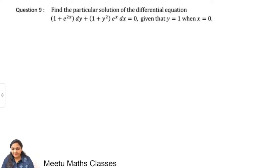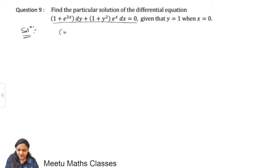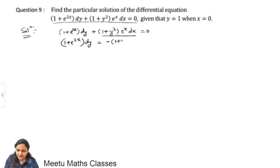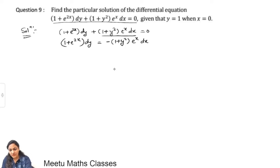The next question is question number 9: find the particular solution of the differential equation e^(2x) dy + (1 + y²) e^x dx = 0. Shifting the dx terms to the right-hand side: (1 + e^(2x)) dy = −(1 + y²) e^x dx. The two functions can be separated — this is a variable separable case.